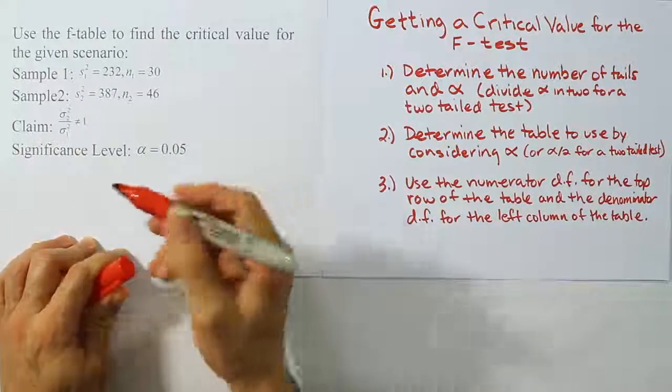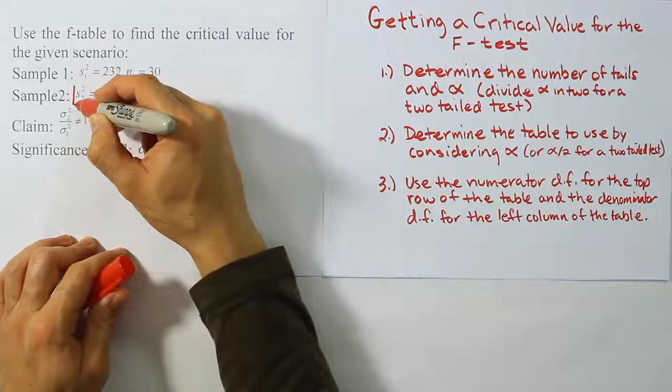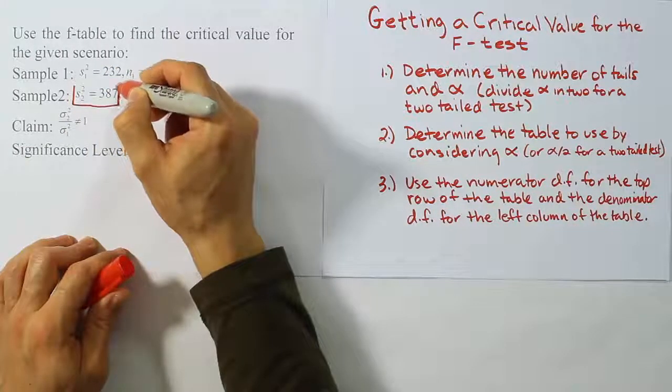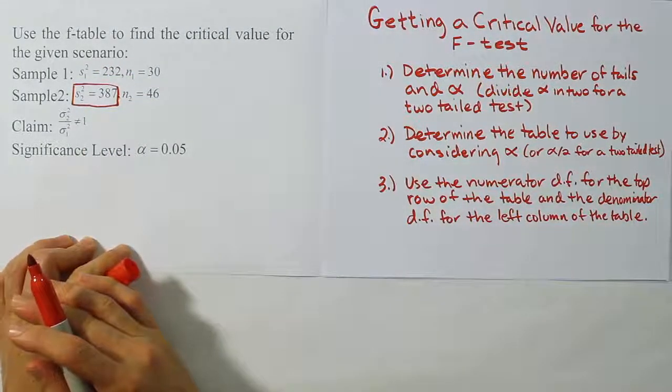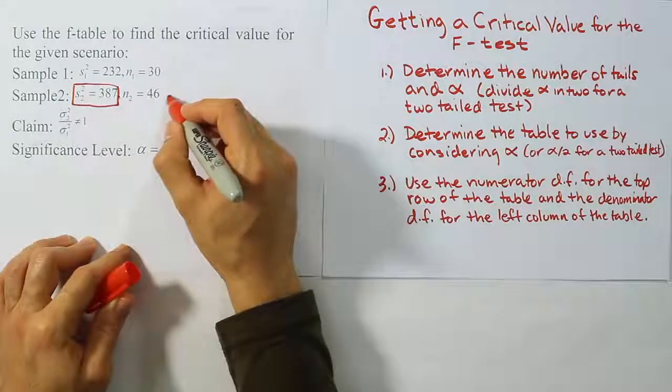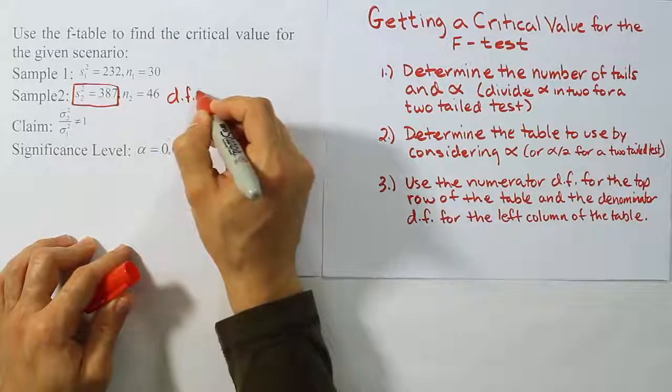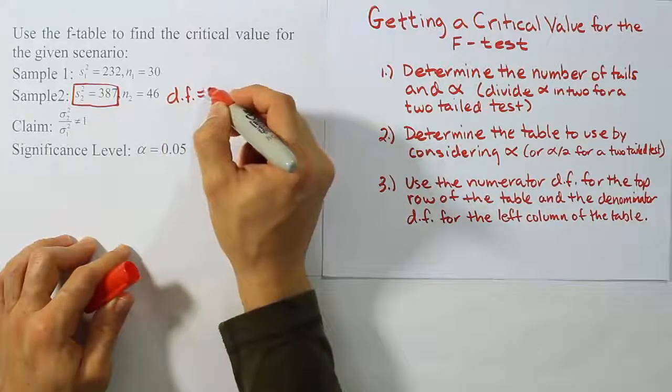So we're going to identify this value here, this value that's the larger of the two sample variances. We're going to identify that as being our numerator. So this means that the numerator degrees of freedom is going to be this value minus 1, which will be 45.